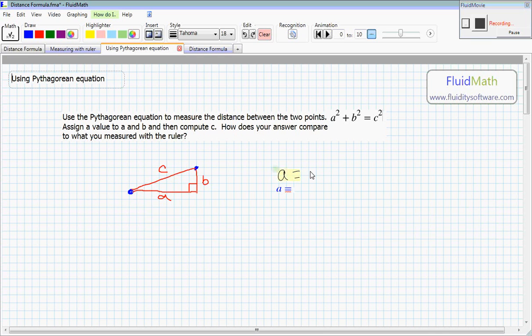So A is going to be equal to, let's see, one. I'm going to count this out. So we have one, two, three, four, five, six, seven, eight, nine units. And one, two, three units up. That's the length B. So we'll say B equals three.